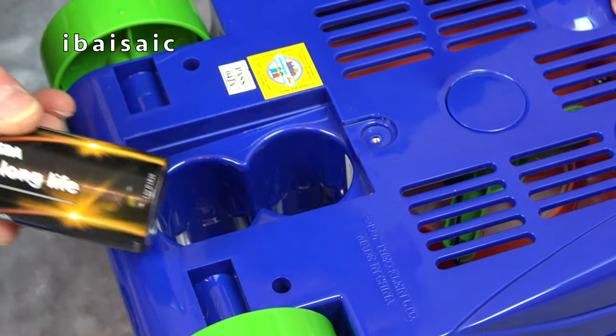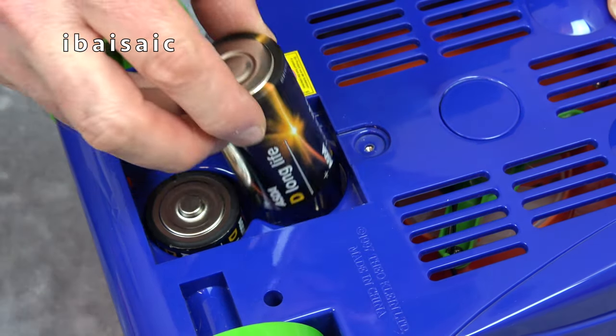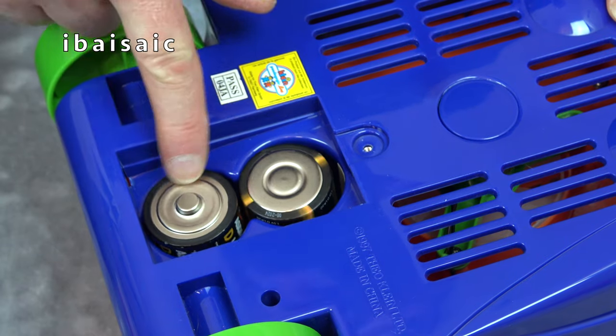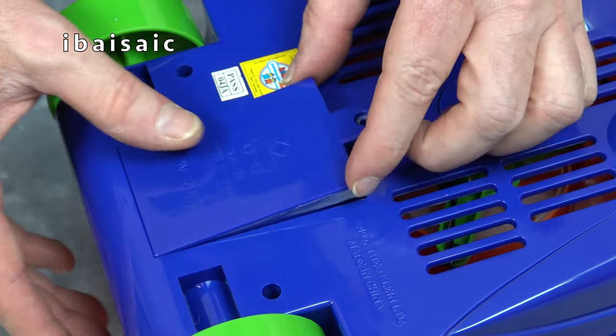So, this is actually D-sized batteries this one takes, not C. Two of them. One with the positive up and one with the positive down, and then we put the cover on.